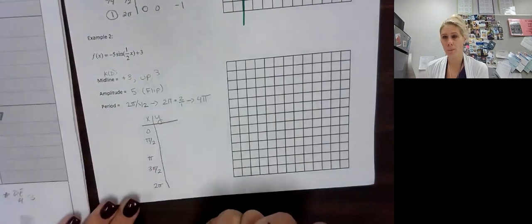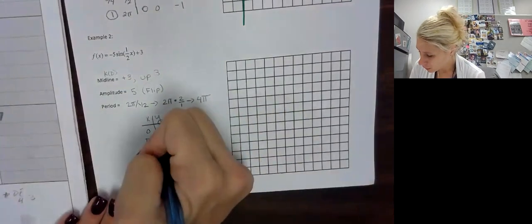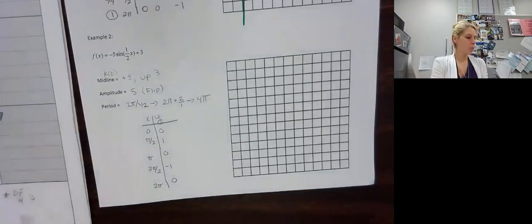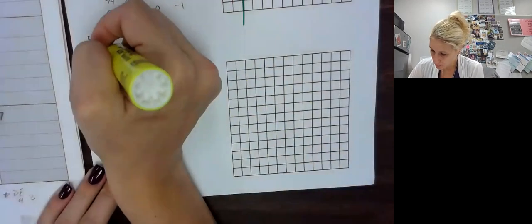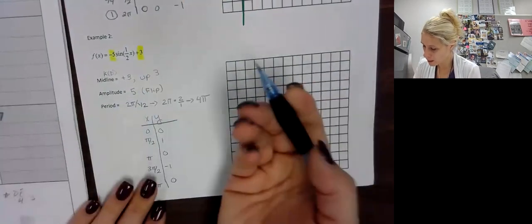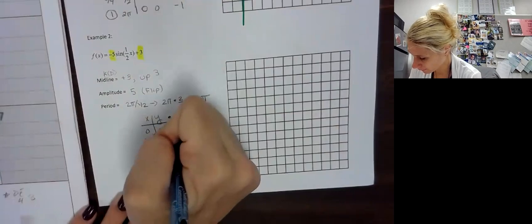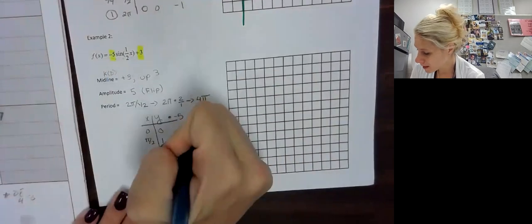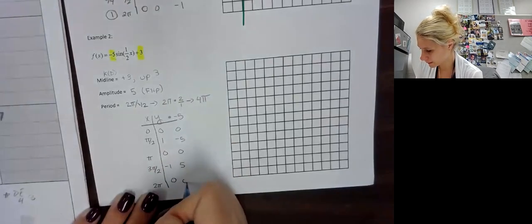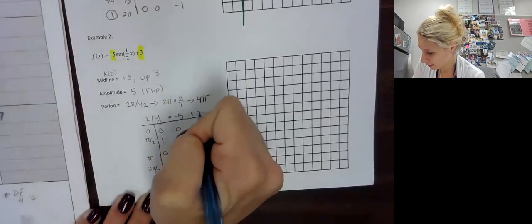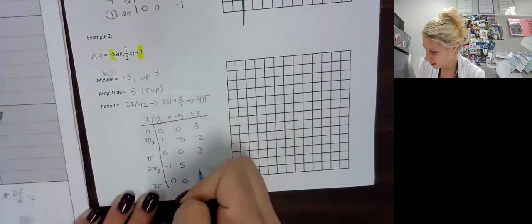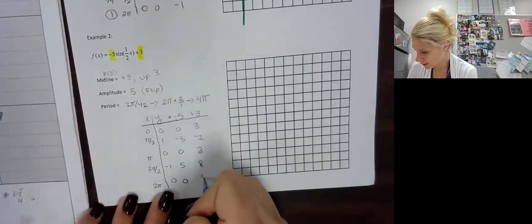Let's make our table for transformations. This is still sine, so the X values are 0, pi over 2, pi, 3 pi over 2, and 2 pi. You can always refer back to your notes for the parent function values. For sine, it's 0, 1, 0, negative 1, and 0. Let's do the Y values first. We have negative 5 and positive 3. Go left to right: multiply by negative 5 to get 0, negative 5, 0, positive 5, and 0. Then add 3 to get: 3, negative 2, 3, 8, and 3.